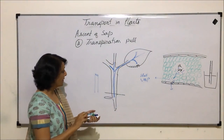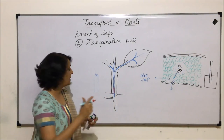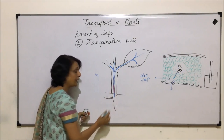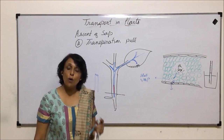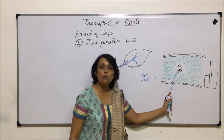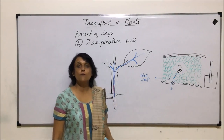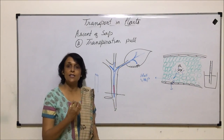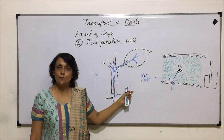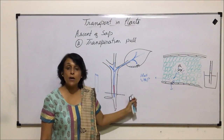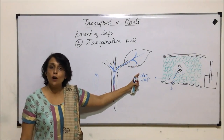Other forces also help: water already raised by root pressure to a certain height, capillarity raising it further, and cohesive and adhesive forces also contributing. Loss of water through transpiration results in the formation of a pull. Because this pull is created due to transpiration, we call it transpiration pull. It is strong enough to take the water column up to the topmost level of the leaf.